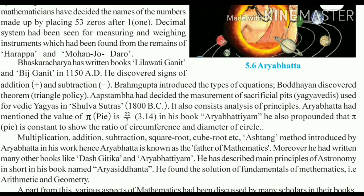Aryabhatta had mentioned the value of pi as 22 upon 7, or 3.14, in his book named Aryabhatta. He also pronounced that pi is constant and shows the ratio of the circumference and diameter of a circle.